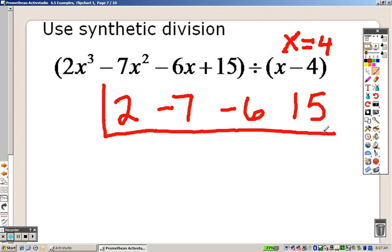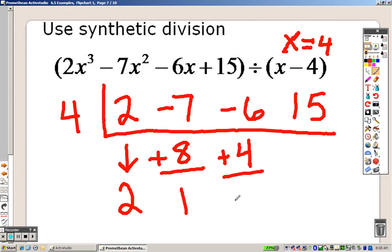So here's your answer. And I set this up just like that. And a 4 is what I'm plugging in now. So I bring down the first number, which is a 2. 2 times 4 is 8. I add them together to get a 1. 1 times that 4 is 4. I add them together to get negative 2. And 4 times negative 2 is negative 8. I add them together to get 7.